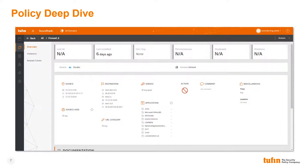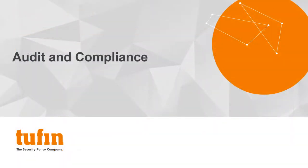From here, we can see all the policy attributes such as sources, destinations, users, applications, and more. We can also see policy metadata such as when the policy was last modified and the certification status if Rule Certification through Tufin is being enforced. In addition to visibility, Tufin provides an array of audit and compliance capabilities to ensure enterprises maintain a state of continuous compliance and full auditability.